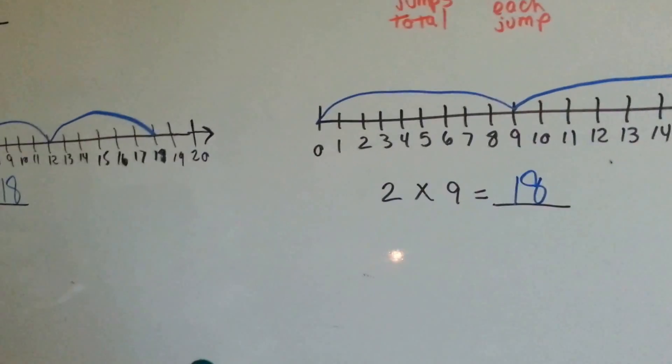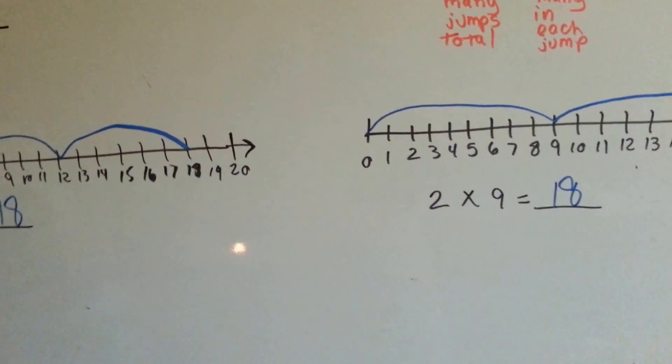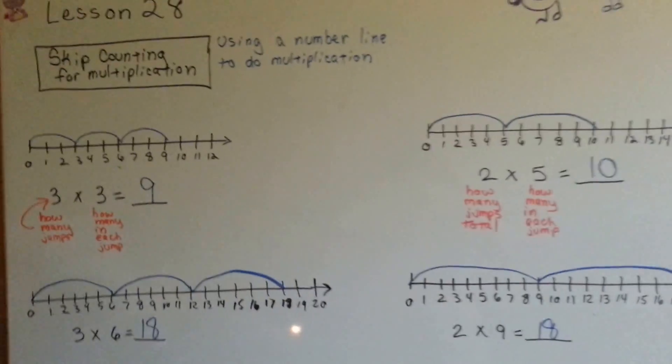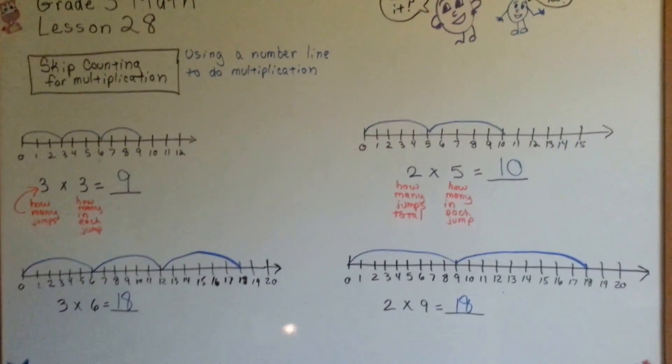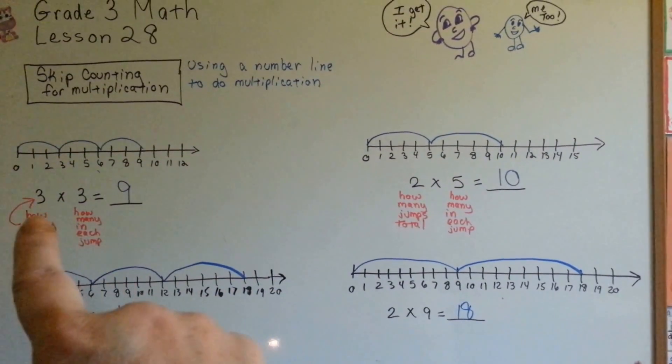Look! 3 times 6 is 18, and 2 times 9 is 18. That is how you skip count for multiplication. You use a number line and you skip over that many numbers that many times.